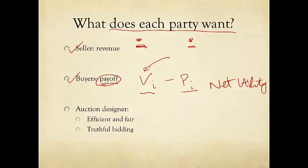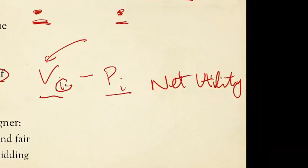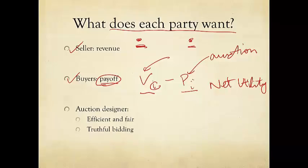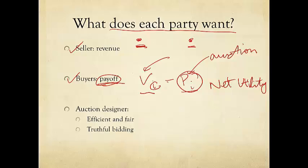Now, of course, valuation is determined by you and, as I said, we assume is independent of others. But the price is not completely determined by you. It's determined by what other buyers do and the rules of this auction. So the auction will decide what prices you have to pay. So clearly, if you know the auction rule changed, you may change your bidding behavior because your payoff is the difference between the valuation and the price.